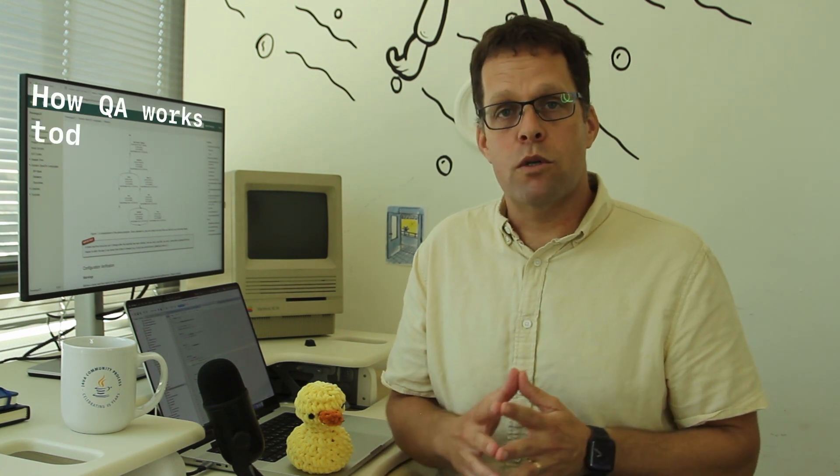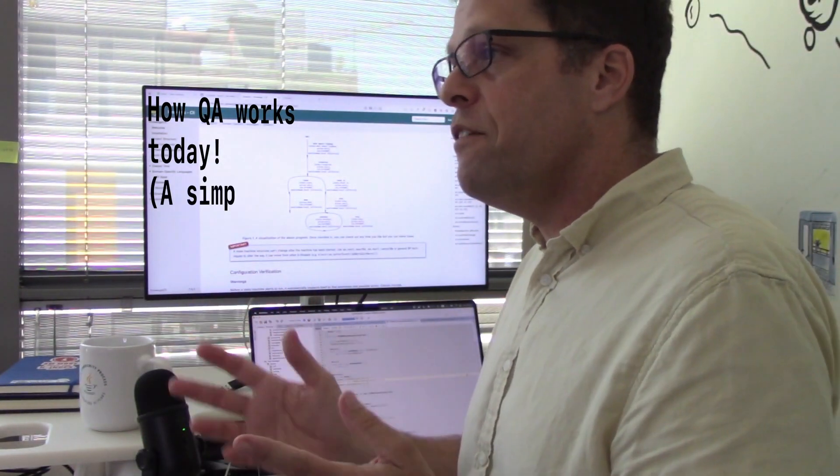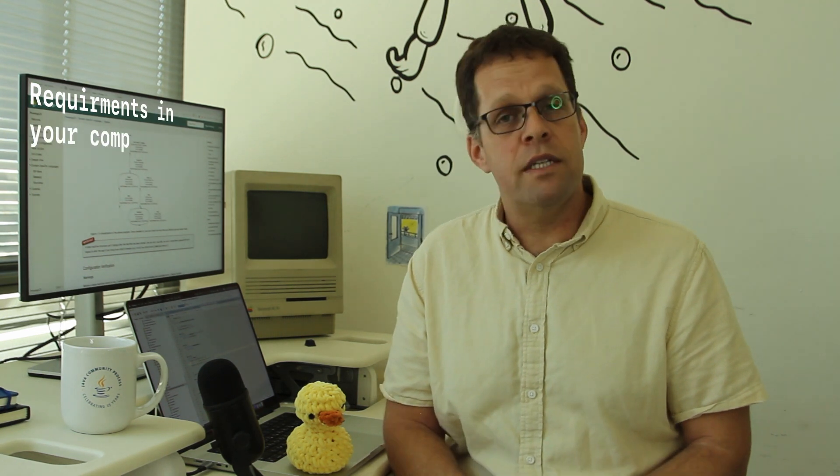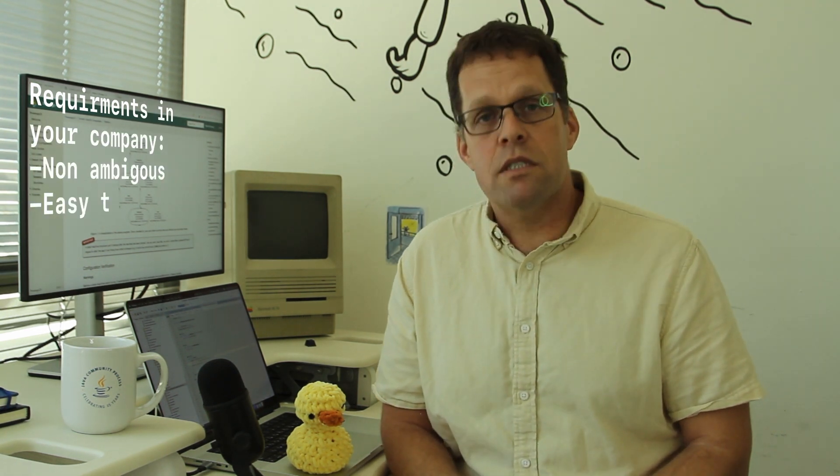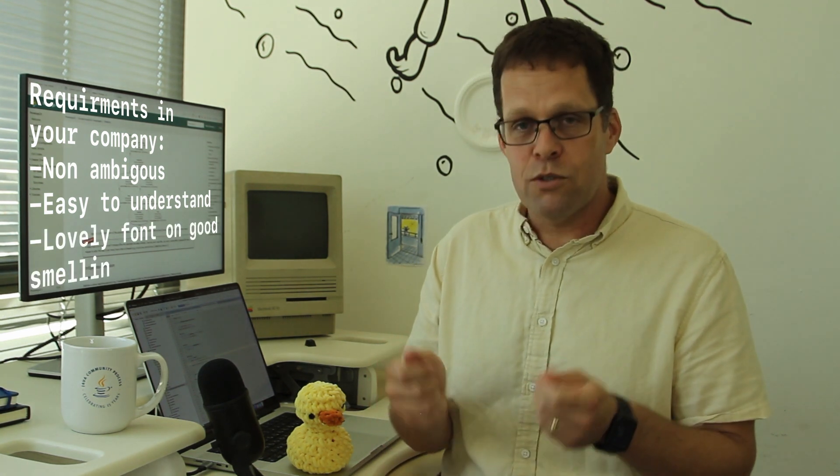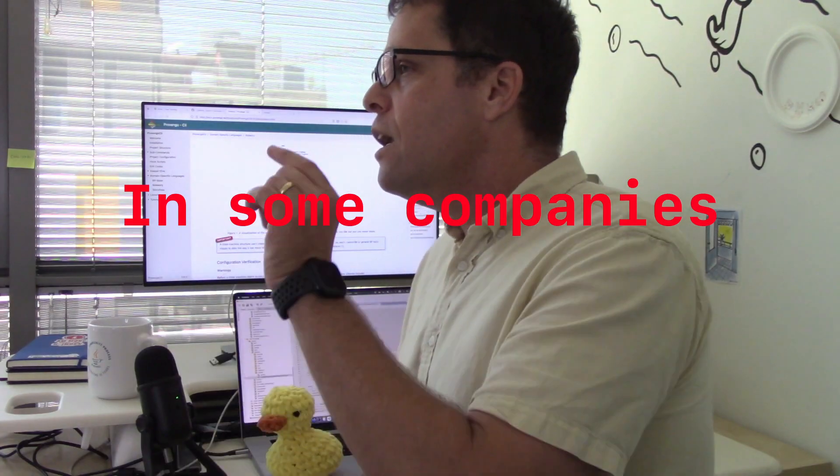Now, let's look at how QA works today. This is obviously a simplified schematic description, but it's close enough to reality to be useful. So, first, there's this requirement that comes along. Now, I'm sure that in your company requirements are non-ambiguous, easy to understand, come printed in lovely font on a paper that also smells good.